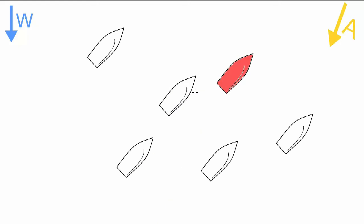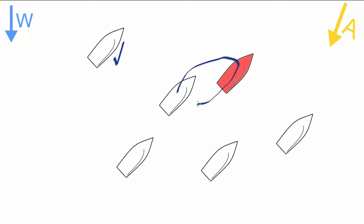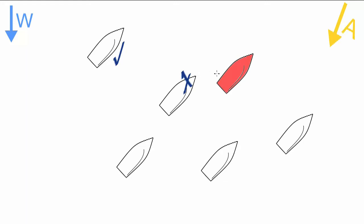Now let's look at an example. Which of the boats is getting dirty air from the red boat? The first boat is looking good — she is well to windward of the red boat and so she is not affected by the disturbed air around it. The second boat is actually in the lee bow position to the red boat — she is within one meter to windward and one boat length back. She is going to end up pointing much lower and she's going to have difficulty sailing. So this is not a good place to be.